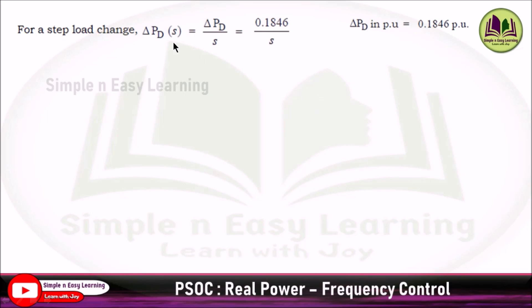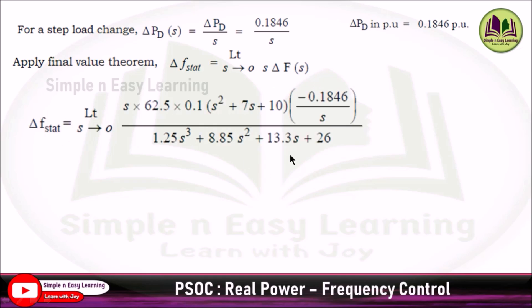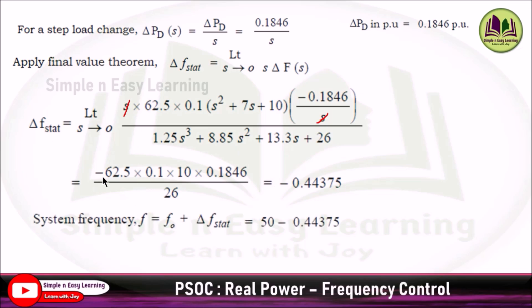For a step load change, ΔPd(s) equals ΔPd divided by s, which is 0.1846 divided by s. Applying the final value theorem, Δf_star equals limit s tends to 0, s times Δf(s). Substituting the whole expression, multiplying with s, we can cancel out this s. Substituting s equals 0, the equation gives minus 0.44375 as the answer for steady state frequency variation. The system frequency changes according to this, so f₀ plus Δf_star, 50 minus 0.44375, gives 49.5562 hertz.